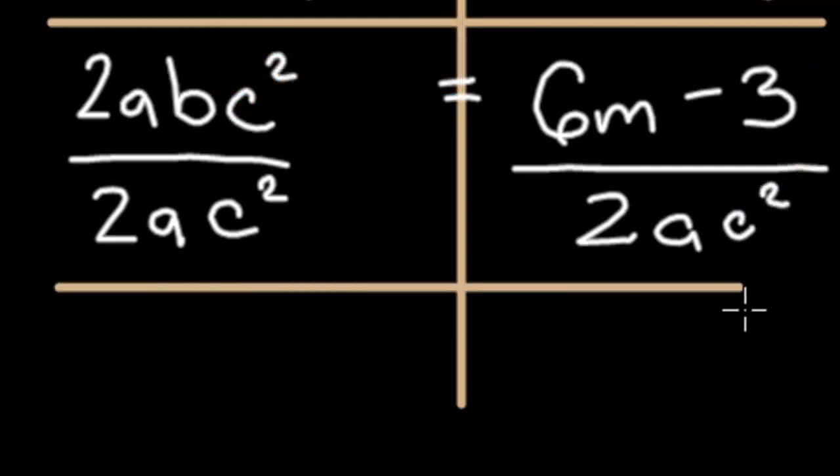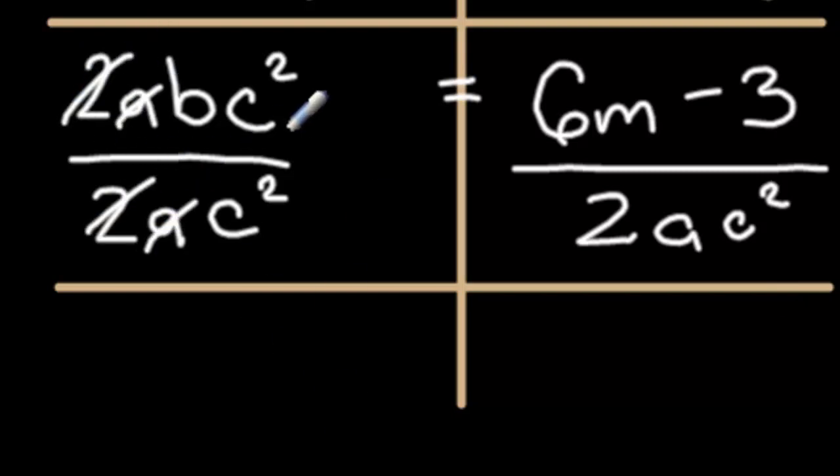From here, we can simplify the equation by canceling out the 2's, since they're in the numerator and denominator, the a's, and the c squared. b drops down, that's the only term left.